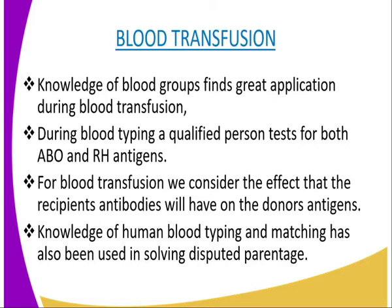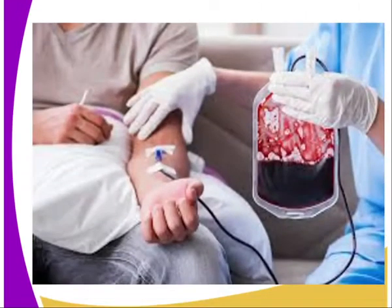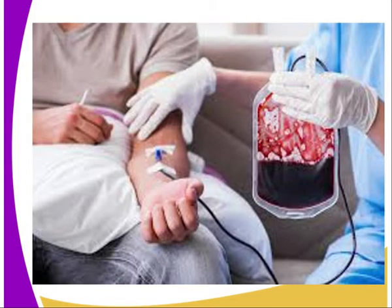Knowledge of blood groups finds great application during blood transfusion, to ensure compatibility of donor and recipient groups. Blood typing is done before the transfusion. During blood typing, a qualified person tests for both A, B, O and Rh antigens. We have four types of blood groups: blood group A, blood group B, blood group AB, and blood group O.